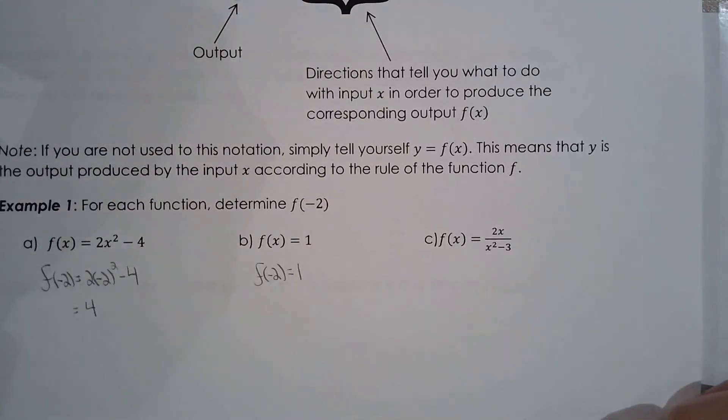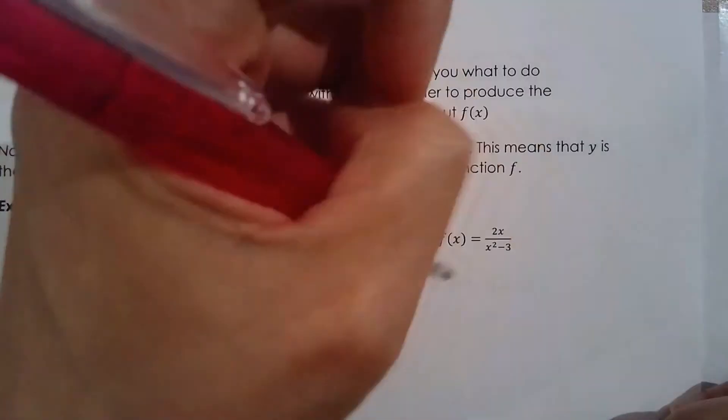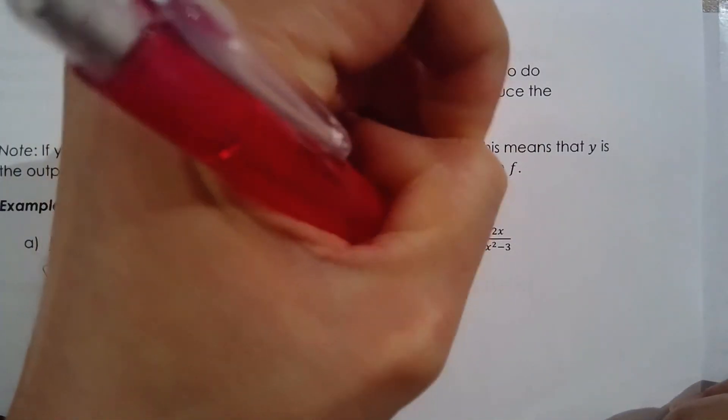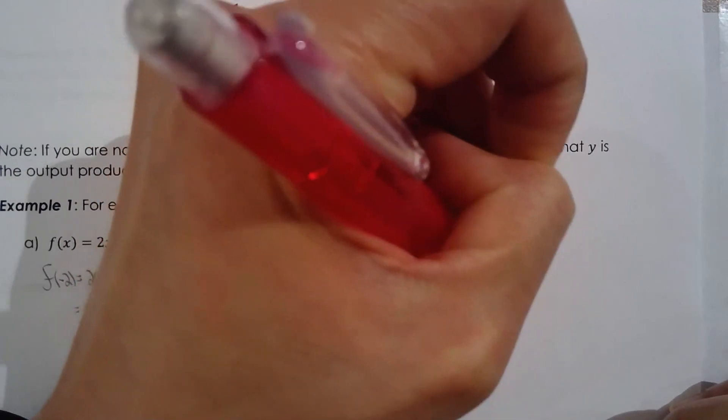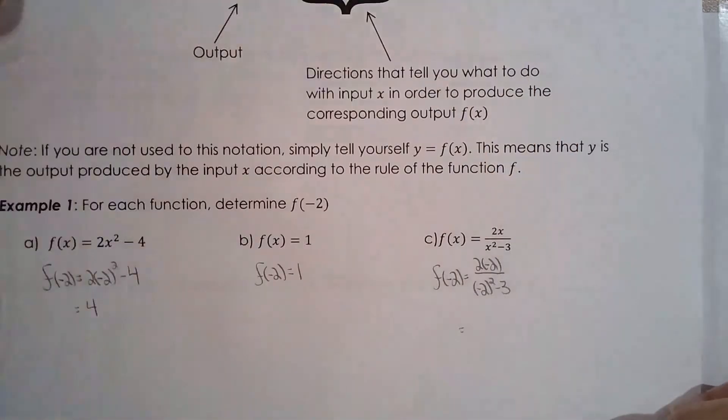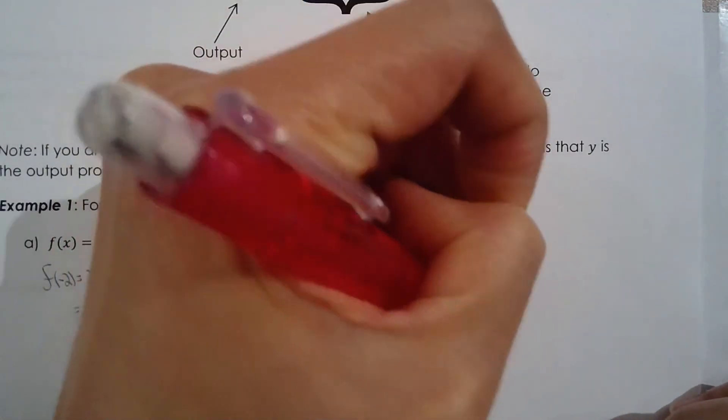Let's go over here. f of x equals 2x over x squared minus 3. I have the instructions, I can find the output when x is negative 2, when the input is negative 2. So that's negative 4 over 1, which is negative 4.